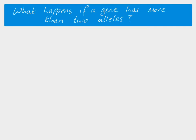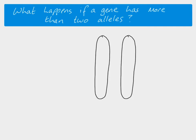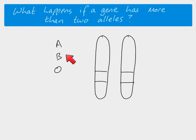We're going to start off with an example and we're going to use blood group as our example. Here we have two chromosomes and we can see the position of the gene on these two chromosomes. This is our gene locus, and with blood group there are three different alleles you could have on these chromosomes: allele A, allele B, and allele O.